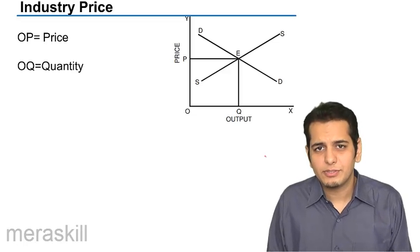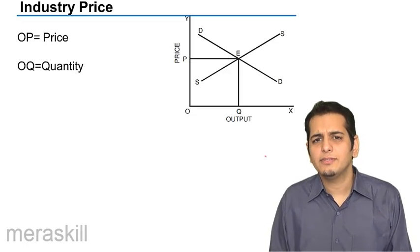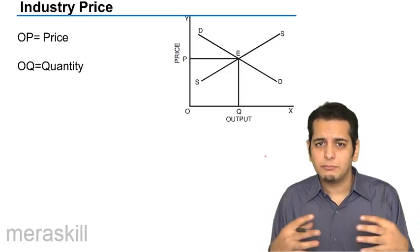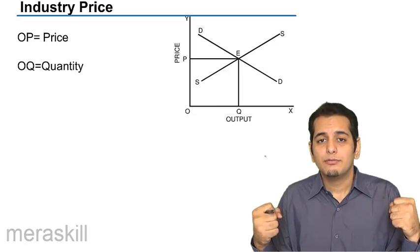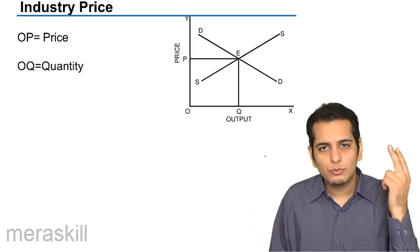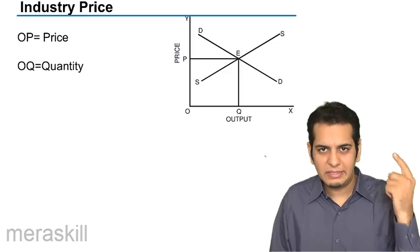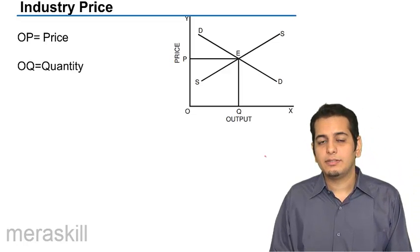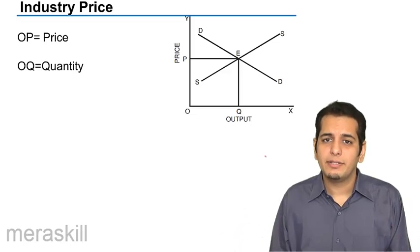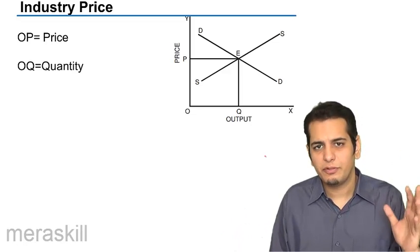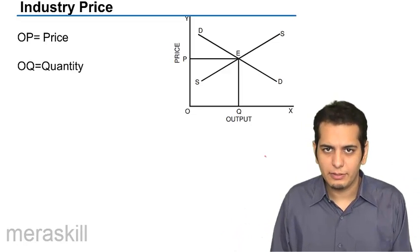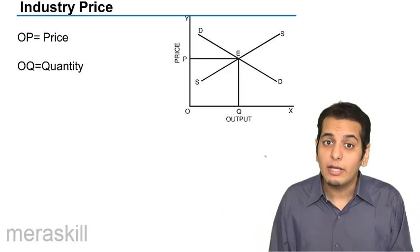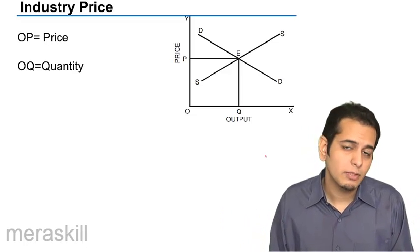We know how the price is set. The price is set by the altercation, by the fight of the two forces — the demand and supply. The price in the market is set by the forces of demand and supply. These two forces operate and we get the equilibrium price.